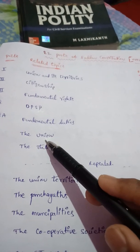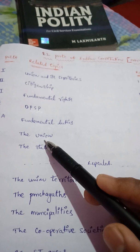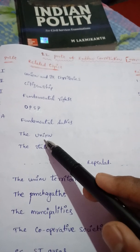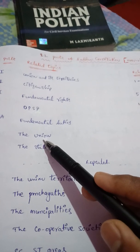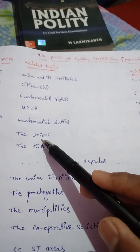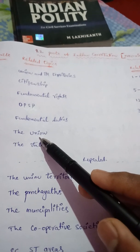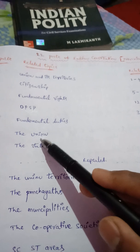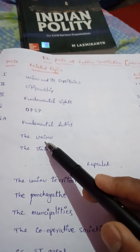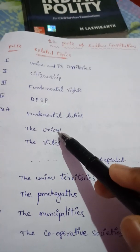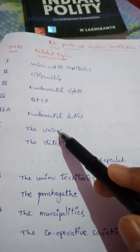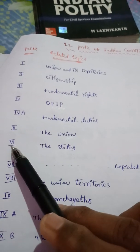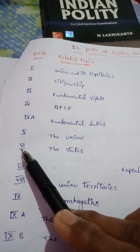Next, National Judicial Appointments Commission — the commission contains the CJI as chairman, two senior judges of the Supreme Court, the Union Law Minister, the Prime Minister, and the Opposition Leader. Next, powers of Parliament to make law.